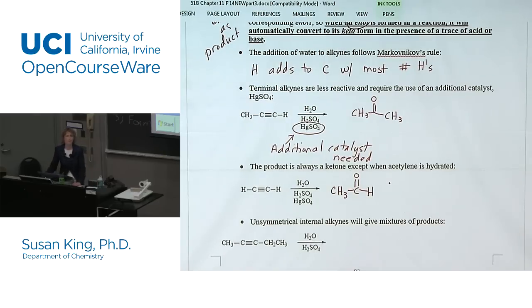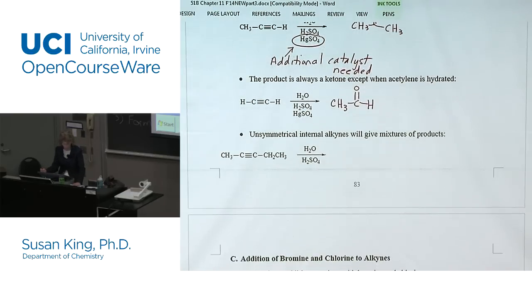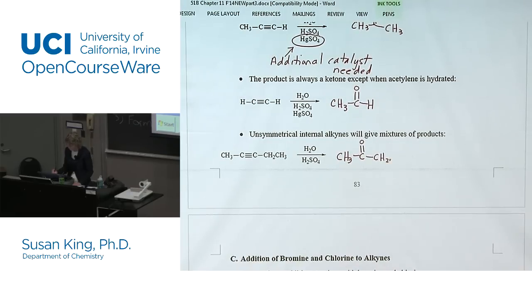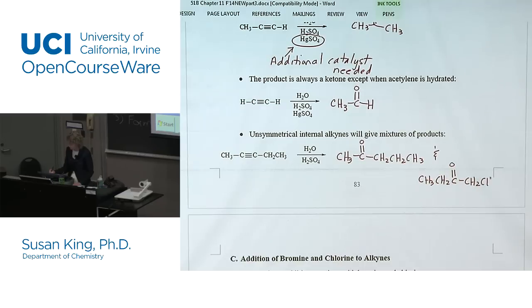The only way you can get an aldehyde with hydration is if you use acetylene — that's it. On unsymmetrical internal alkynes you'll get a mixture of products — there's nothing you can do about it, so this will give two products. If you wanted to make one of those two products specifically, you would probably do it a different way because they would be really difficult to separate from each other.